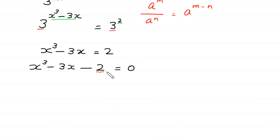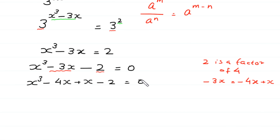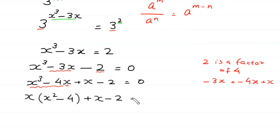Now, because 2 is a factor of 4, we split this negative 3x as negative 4x plus x. So we write x cubed minus 4x plus x minus 2 is equal to 0.